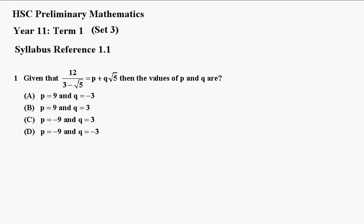Question 1. Given that 12 over 3 minus root 5 equals p plus q root 5, then the values of p and q are A, B, C, or D.